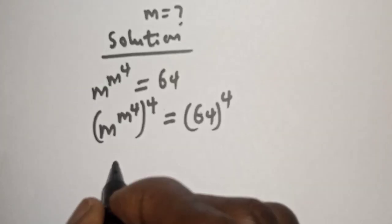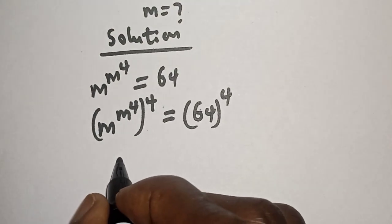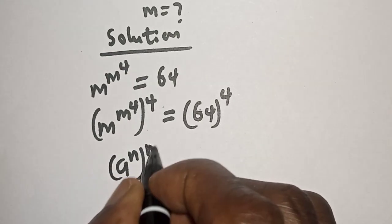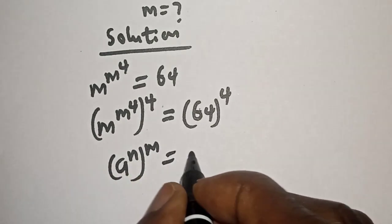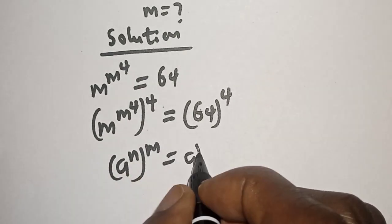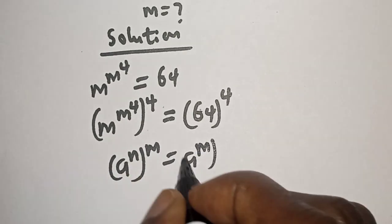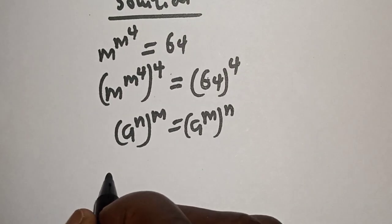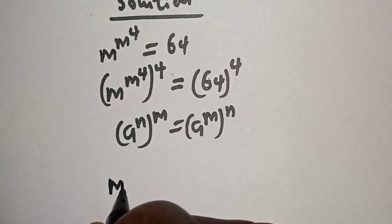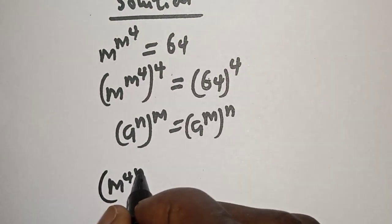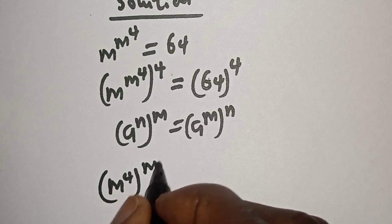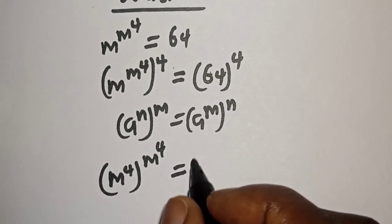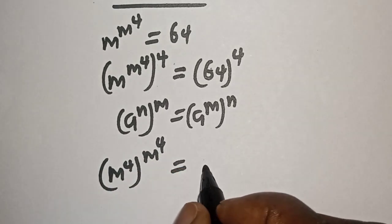Take note of this exponential rule: a raised to power n to the power of m is equal to a raised to power m to the power of n. Then we have m raised to power 4 to the power of m raised to power 4 is equal to 64 to the power of 4.